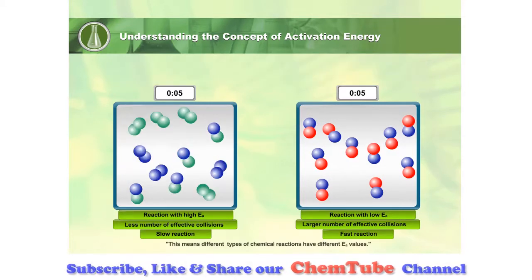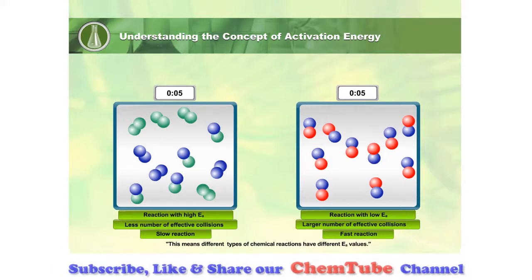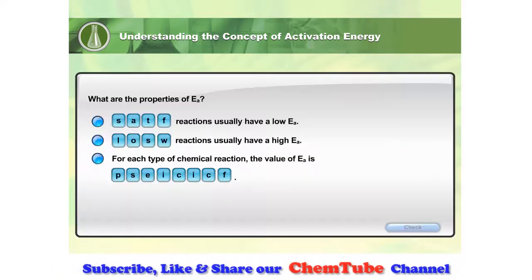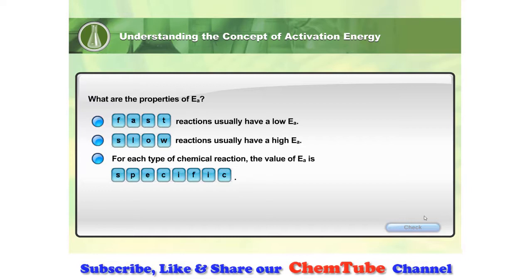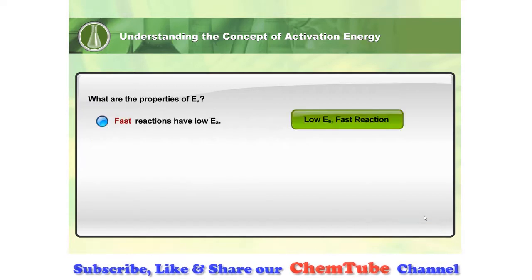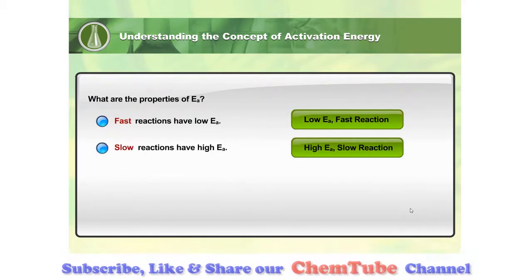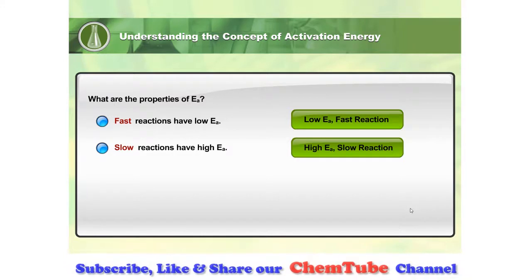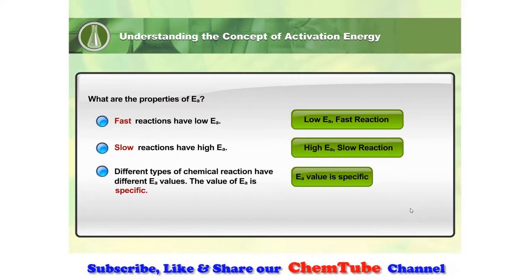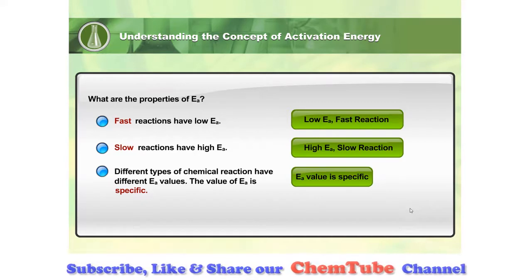This means different types of chemical reactions have different Ea values. So, what are the properties of activation energy? Fast reactions have low Ea values. Slow reactions have high Ea values. Different types of chemical reactions have different Ea values, and the value of Ea is specific.